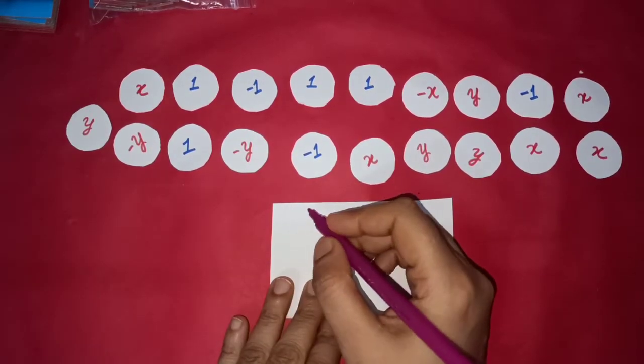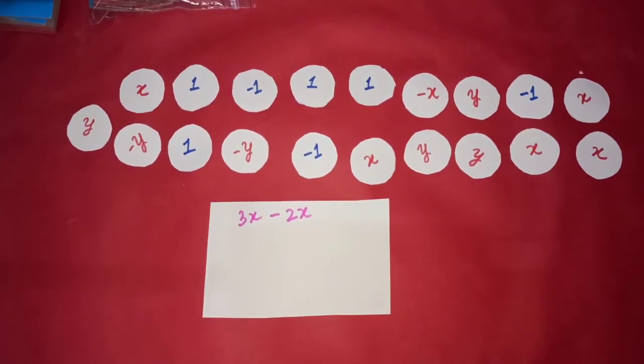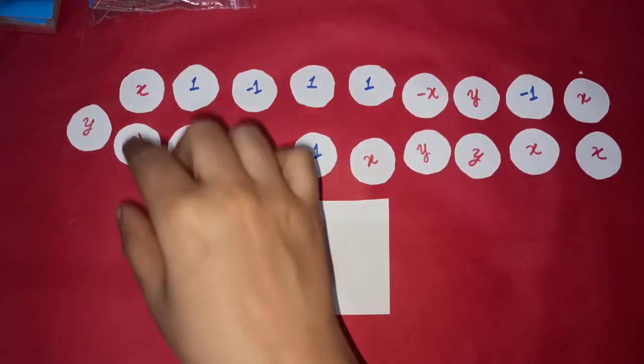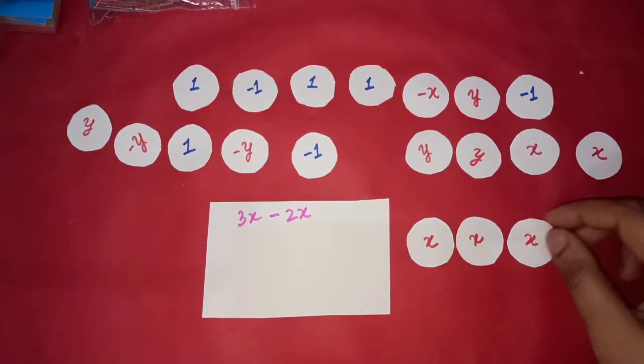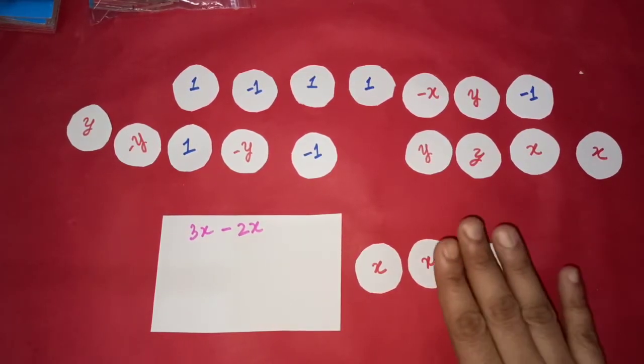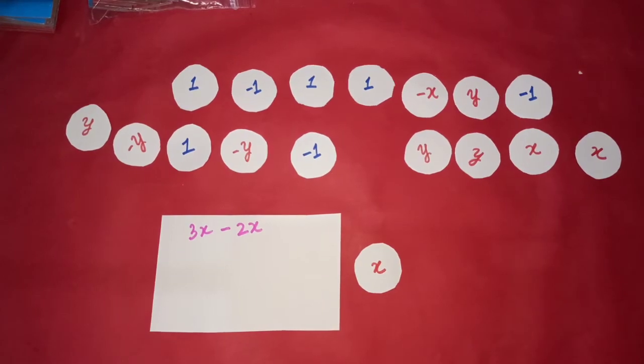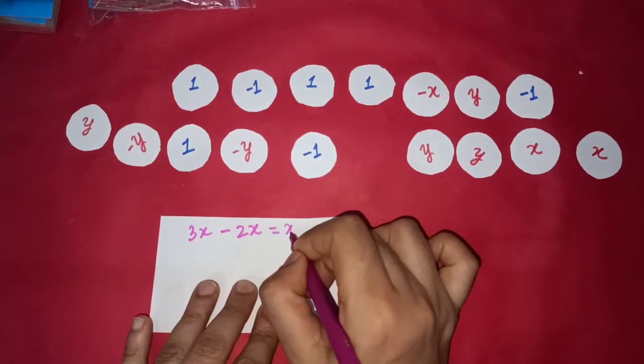First question is 3x minus 2x. So that means we have to take away 2x's from 3x's. This is 3x's. I am having 3x's with me and I have to take away 2x's. So I just take away 2x's. What is left with me? 1x. So the answer to this problem is x.